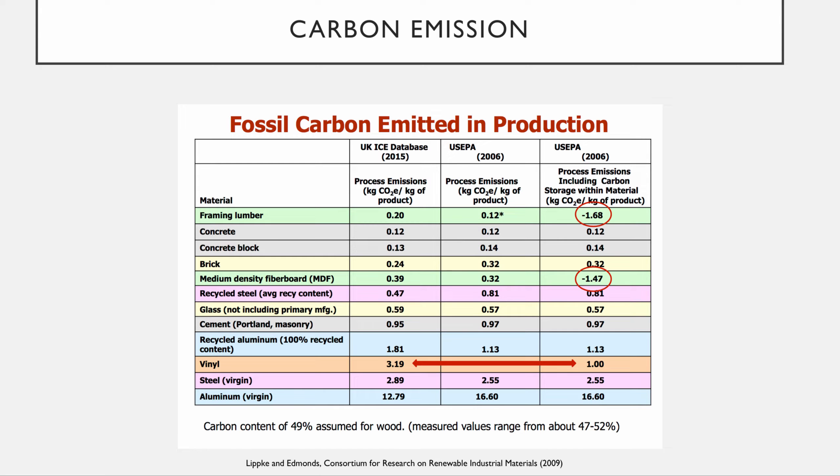One really interesting finding is when we look at framing lumber and medium-density fiberboard — basically sawdust chips glued together — we actually see negative numbers for kilograms equivalent of CO2 emitted into the atmosphere when we include not only emissions but carbon storage. What's happening is that wood has the ability to sequester carbon, meaning it stores carbon.